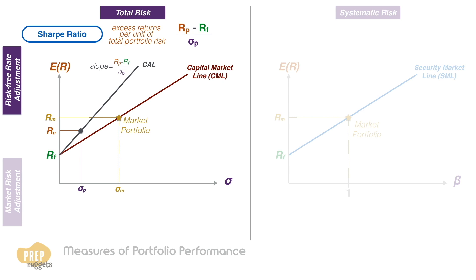The Sharpe Ratio can be compared to the slope of the CML, which is the Sharpe Ratio for any portfolio along the CML. If the slope of the CAL is steeper than the CML, it means that the portfolio outperforms the market on a risk-adjusted basis.